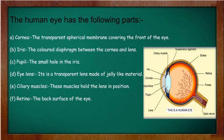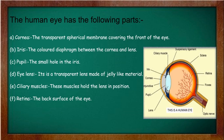If you look at the eye, there is a colored ring — that is the iris. The pupil is a small hole in the iris. It appears as a small black circular hole in the center of the eye. The eye lens is a transparent lens made of jelly-like material. The ciliary muscles hold the lens in position.